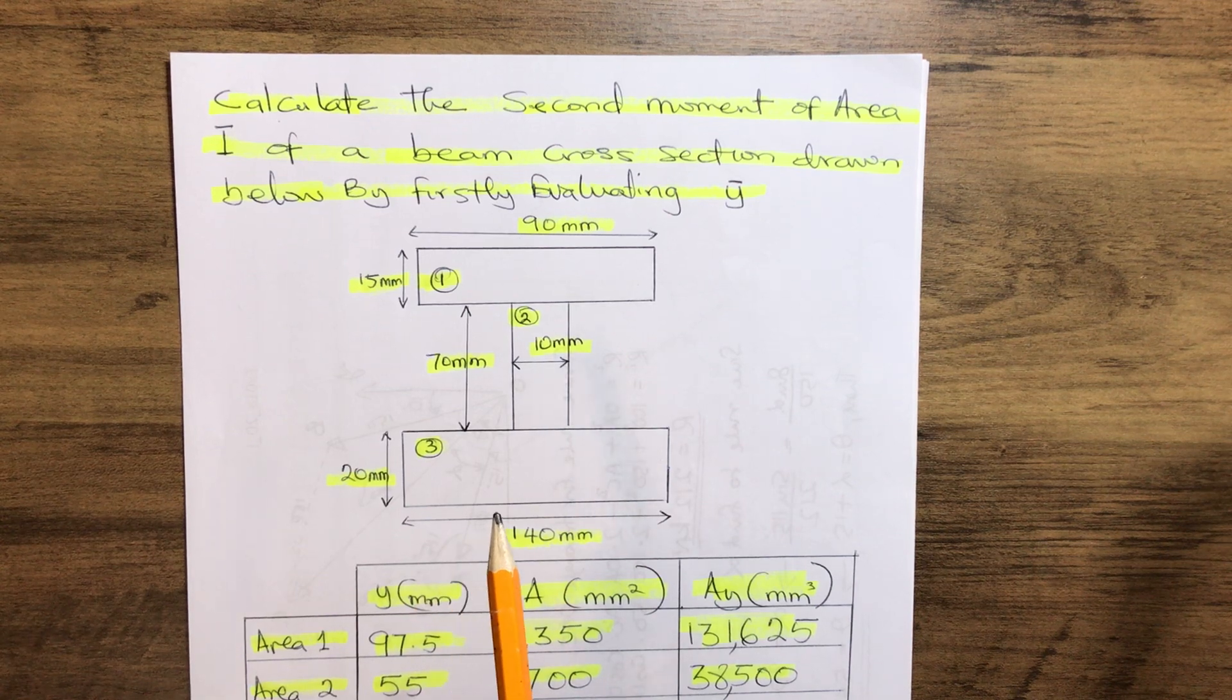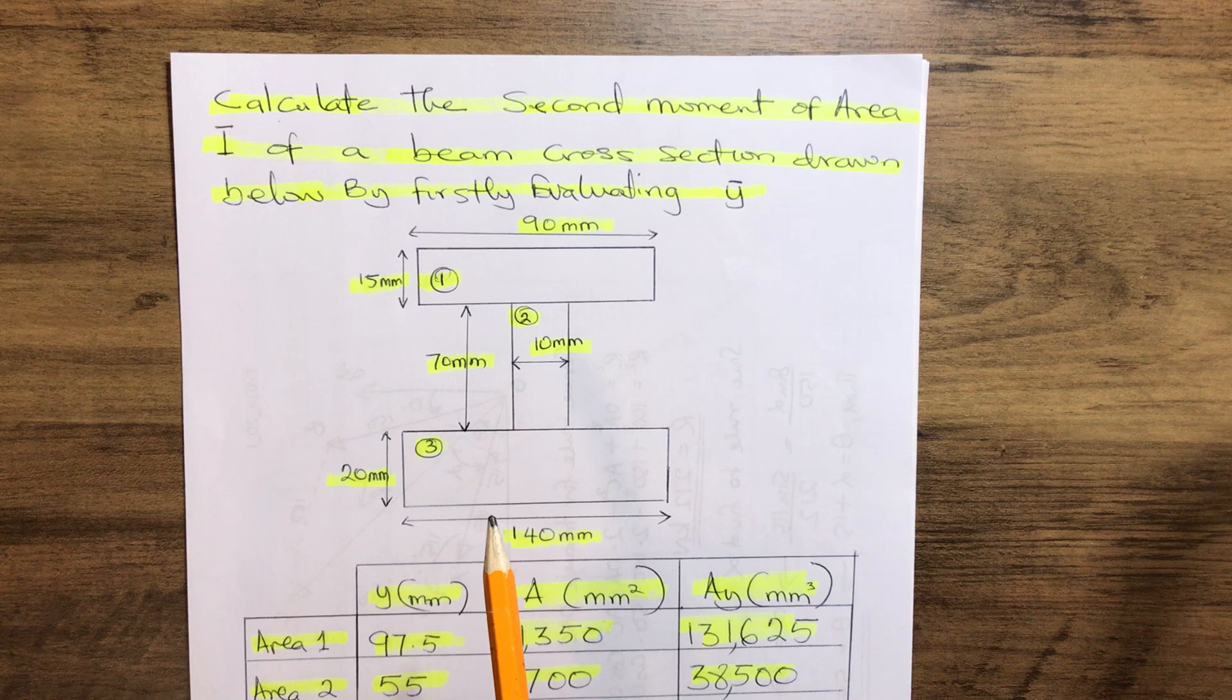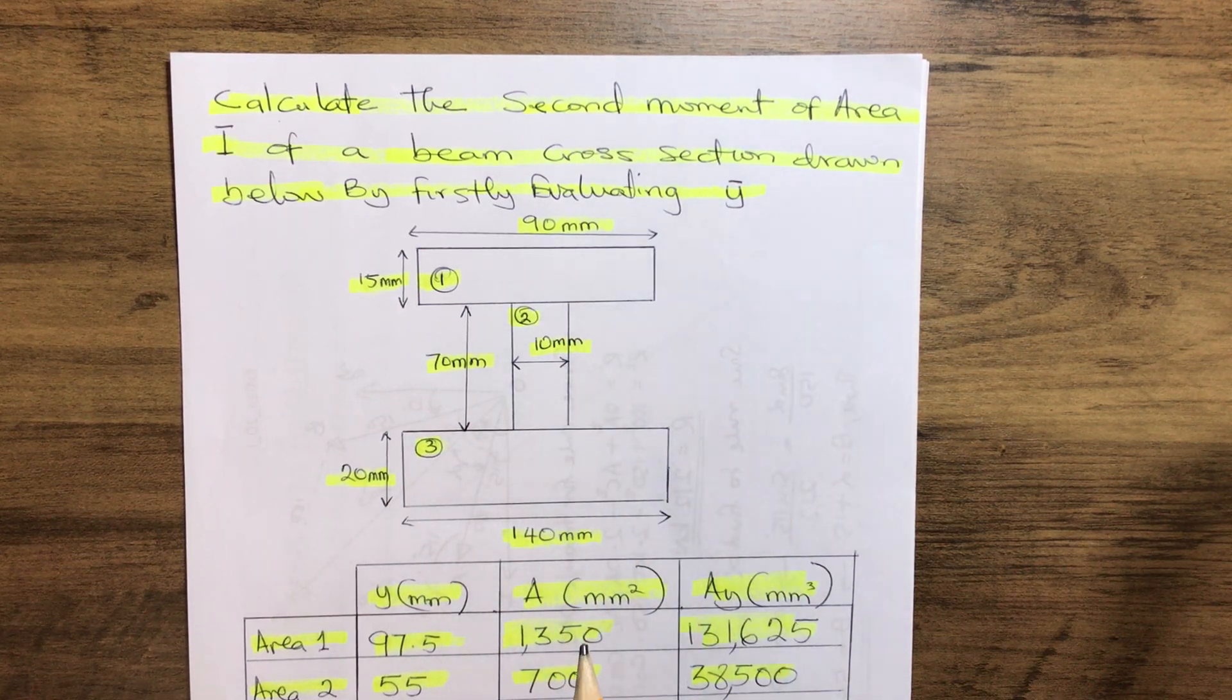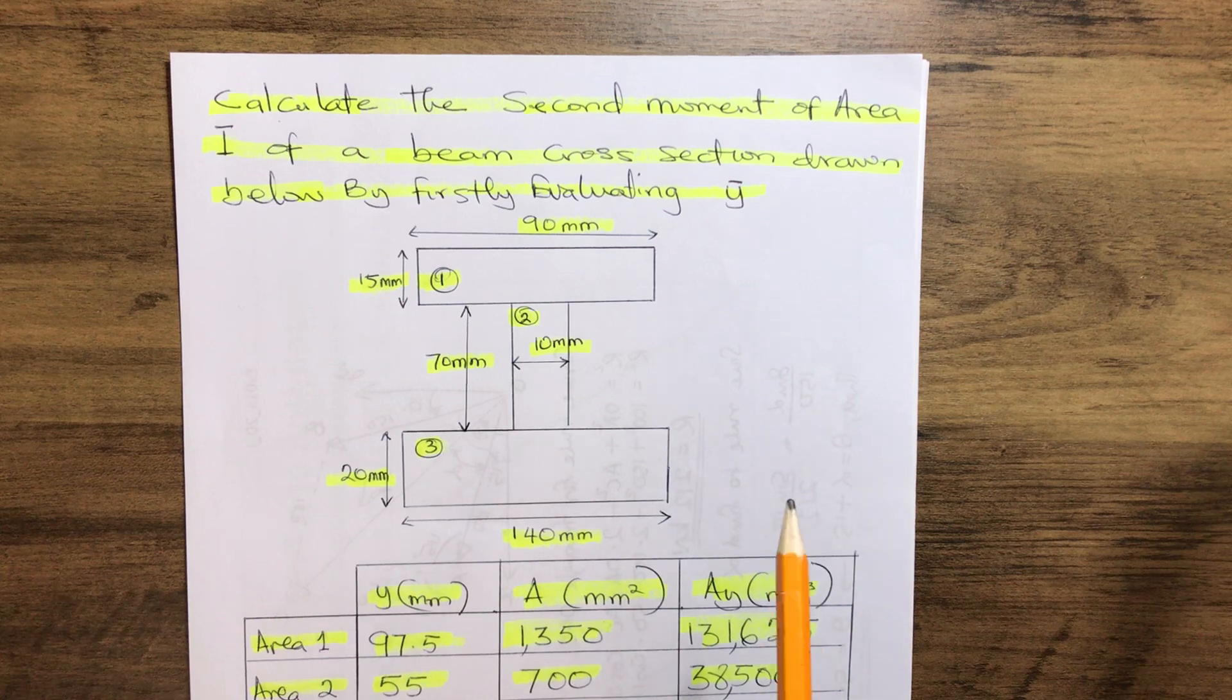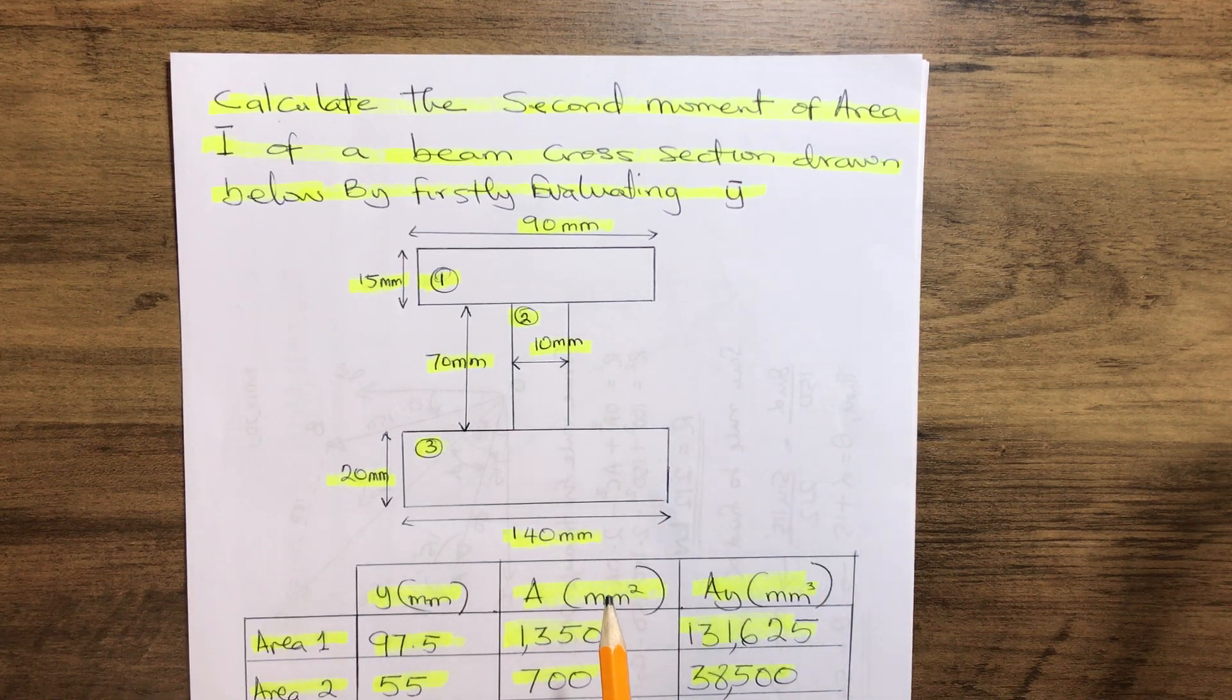First of all, evaluate the Y-bar. The Y-bar is a distance from the centroid of the whole cross-section of the beam.